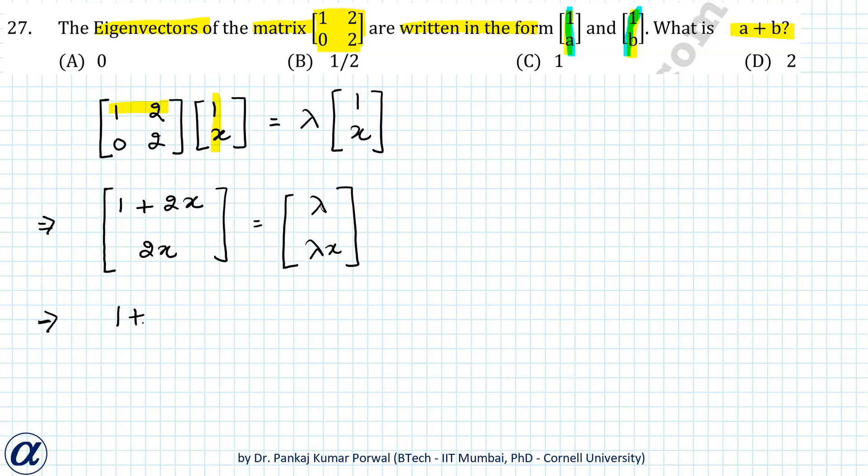This gives me 1 plus 2x equals λ, and 2x equals λx. If I substitute the value of lambda from the first equation into the second equation, I get 2x equals 1 plus 2x times x.